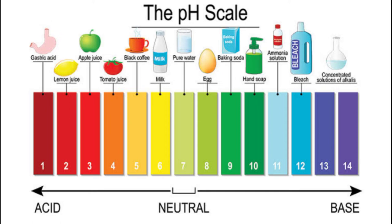If the hydrogen ions are present in a large amount, it becomes a strong acid. If the hydrogen ions are present in a small amount, then it is called a weak acid or strong base. If the pH value is less than 7, then it is a strong acid and weak base.